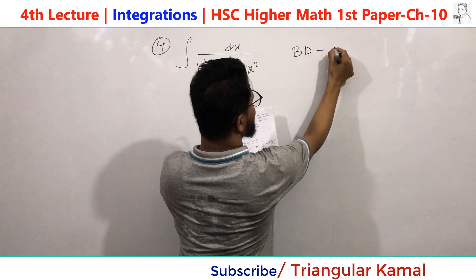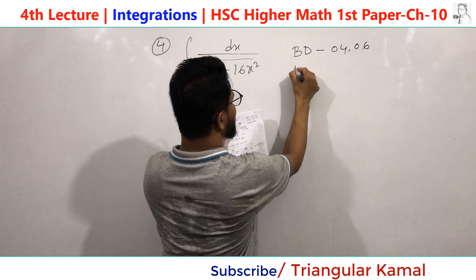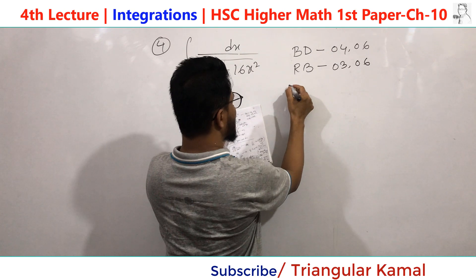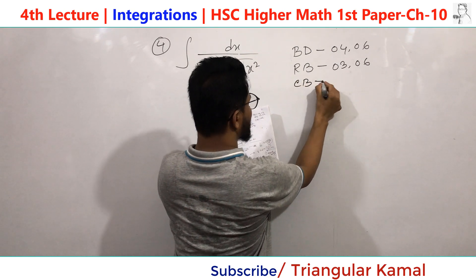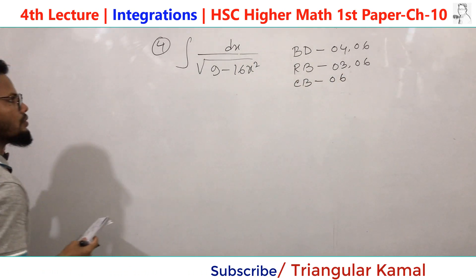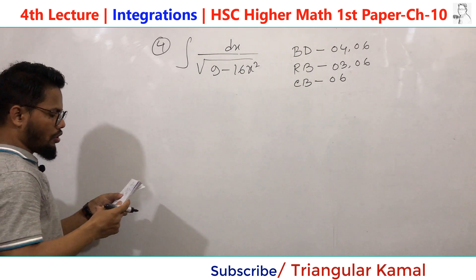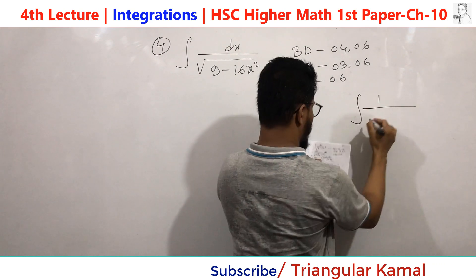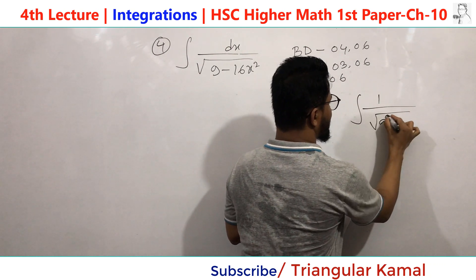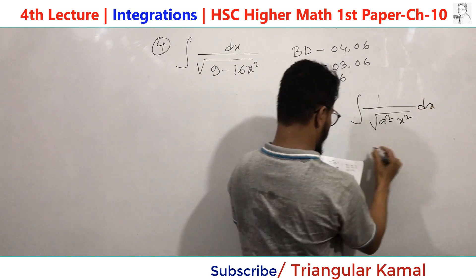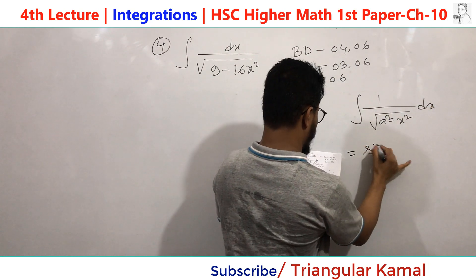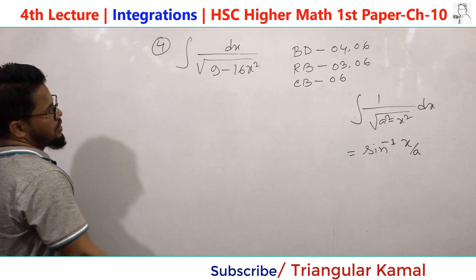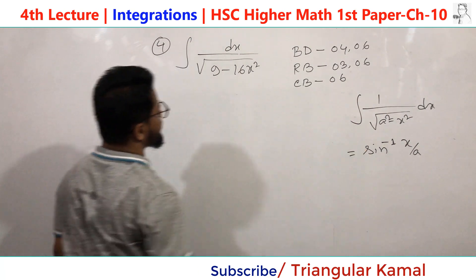This came in Dhaka Board 2004 and 2006, Rajshahi Board 2003 and 2006, and Chittagong Board 2006. We will apply the formula: ∫ 1/√(a² − x²) dx = sin⁻¹(x/a) + c. Now we take 16 as a common factor: the integral becomes ∫ dx / √(16(9/16 − x²)), using this to match the standard form.